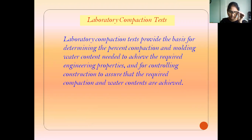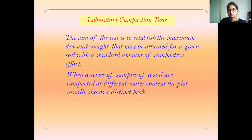The laboratory compaction test provides the basis for determining the percent compaction and molding water content needed to achieve the required engineering properties, and for controlling construction to ensure that the required compaction and water content are achieved. The main aim of compaction is to achieve the maximum dry density of a given soil with a standard amount of compaction effort.